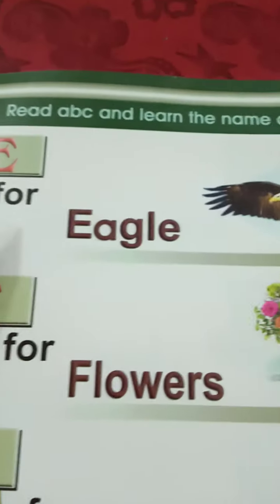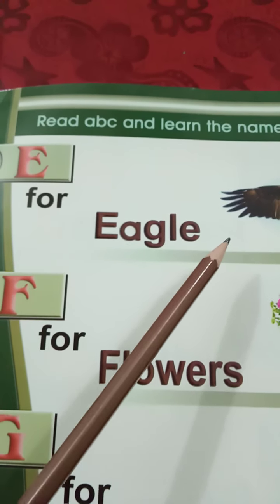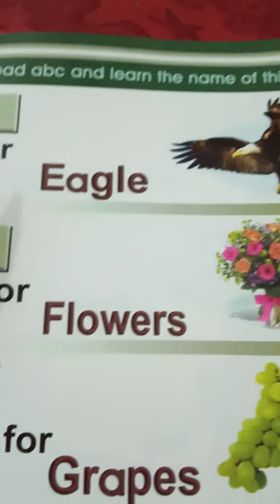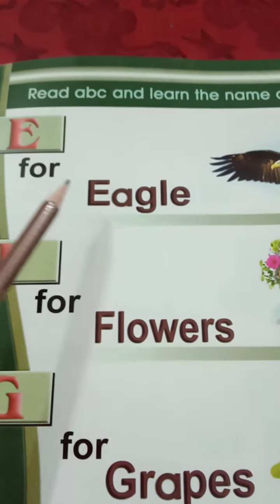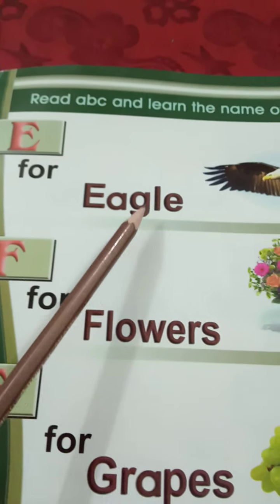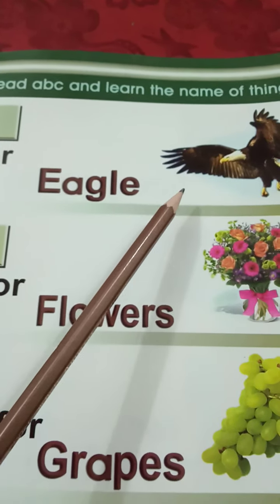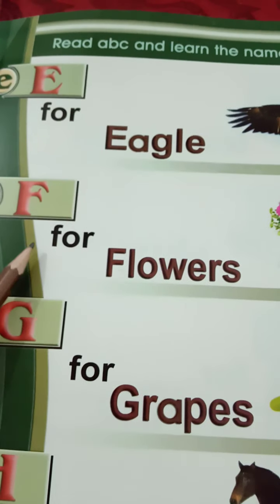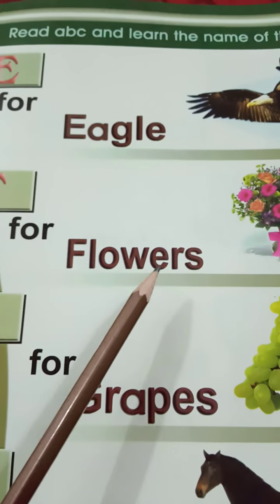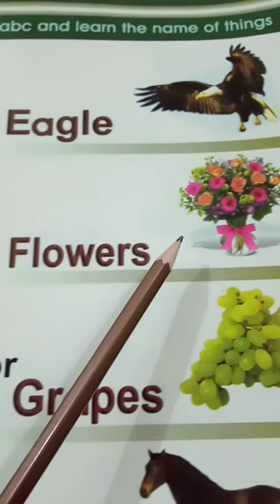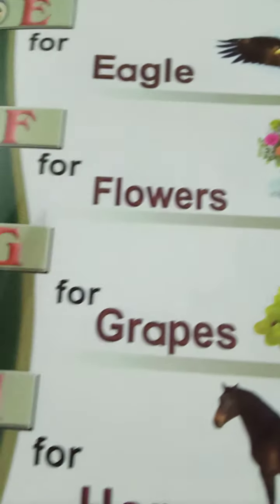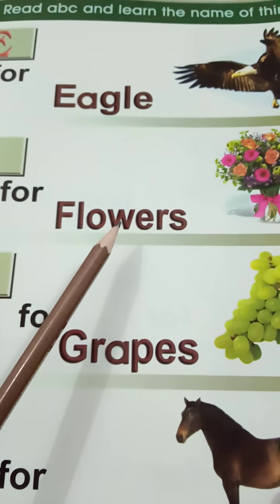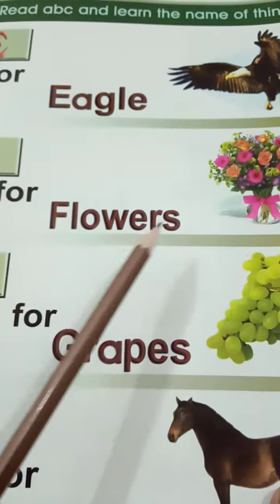E for Eagle. Eagle means uqqab. F for Floors. Floors means pool.